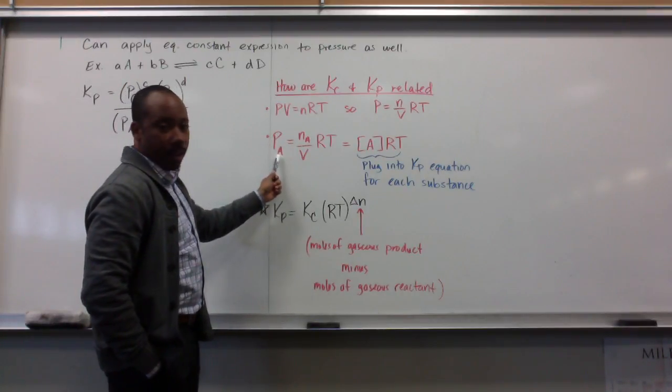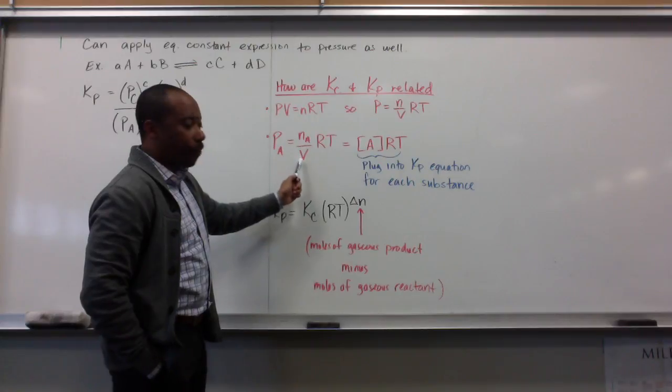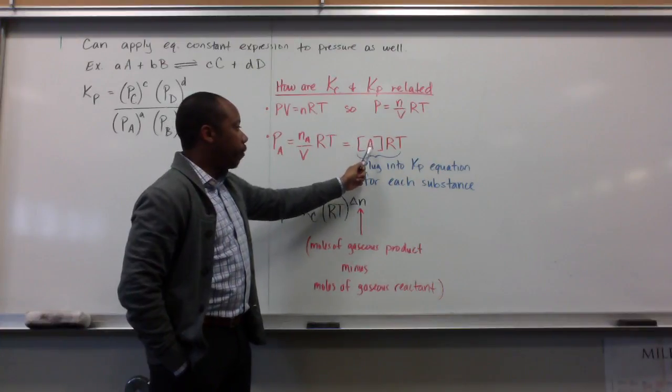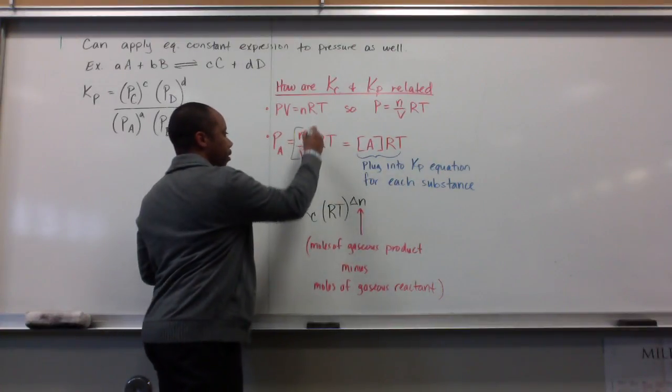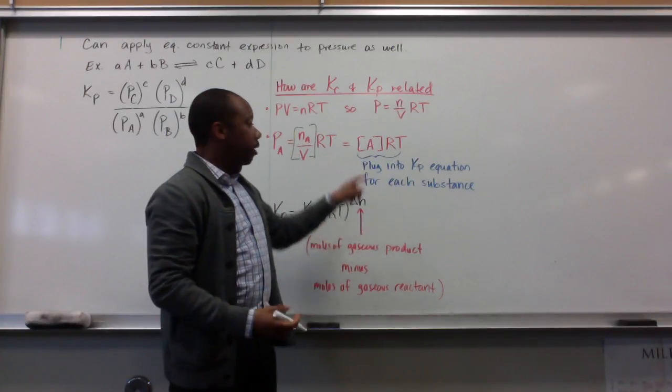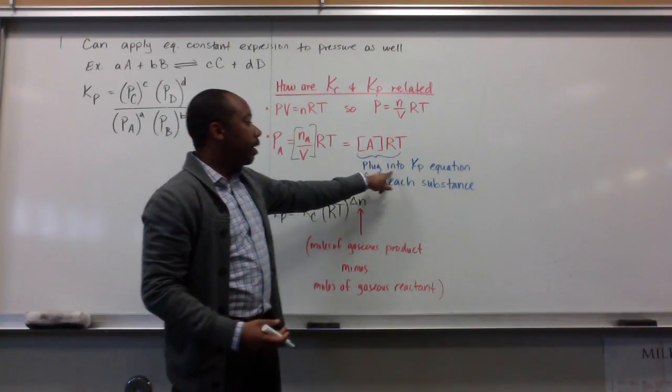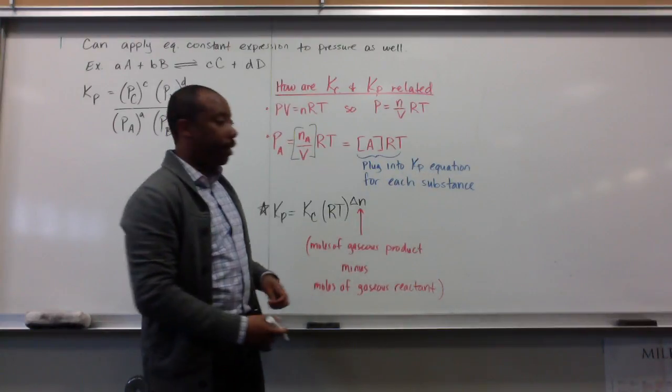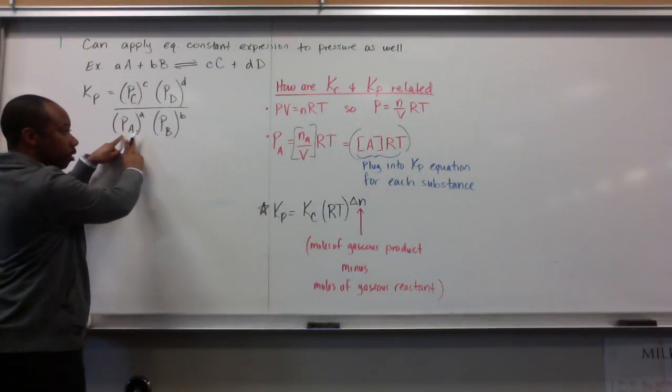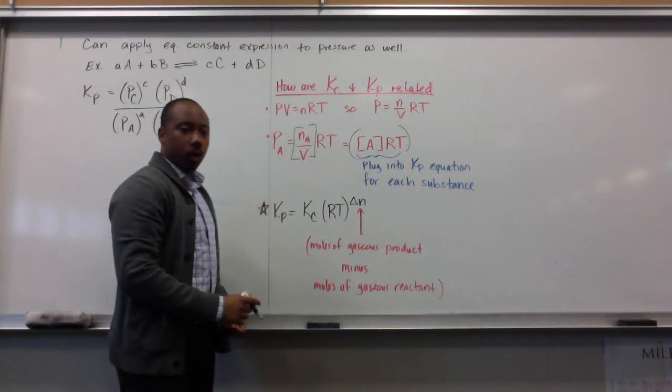So P, the pressure of A, is equal to the number of moles of A over the volume of the container times RT. We know that n over V is molarity or concentration. So, this is equal to the concentration of A. This here. The concentration of A. Or M for molarity, MRT. But here I just put the concentration symbol to make it simple for you. And then we plug this into the K sub P equation for each substance. Meaning, take this here and plug it in for A. Do the same thing for B. Plug it in for B. Then C, then D.